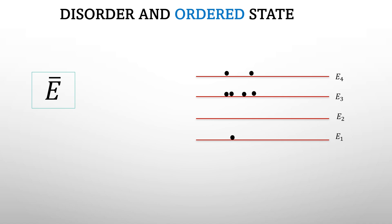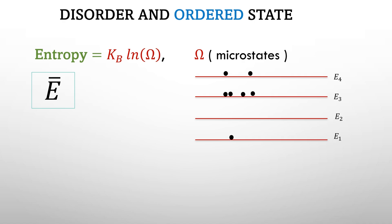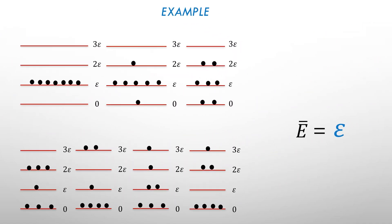So entropy is given by the formula KB log omega, where omega is a number of possible configurations or simply known as microstates. For example, suppose the average energy of the system is E, then possible number of configurations for our seven particle system are seven.